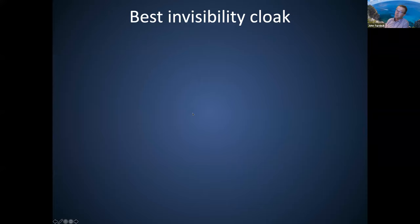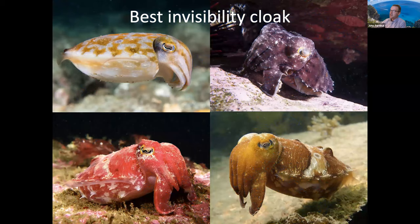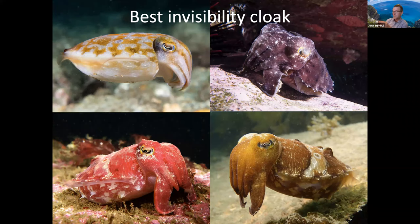The best invisibility cloak award goes to the Sepia mestus, the reaper cuttlefish. That's because it can change colour like the seahorse, but on steroids. With seahorses, you don't see them change before your eyes, but this cuttlefish can change in a matter of a second as it moves from one substrate to the next. These are four photographs of the same species, just different colours as it moves from one background to another.